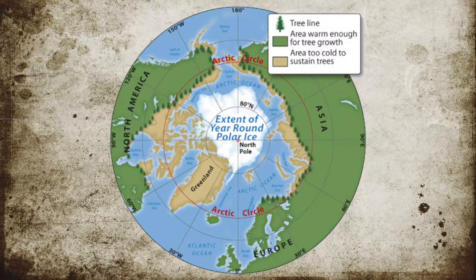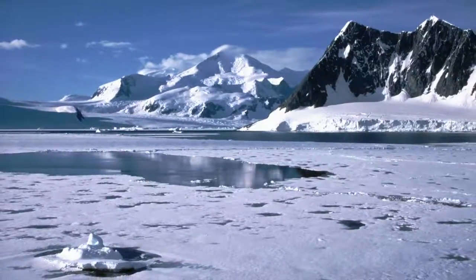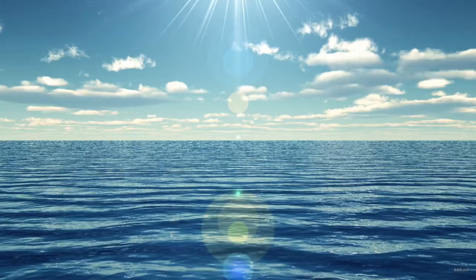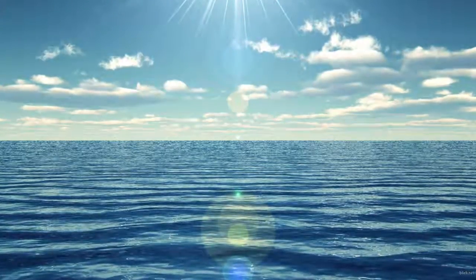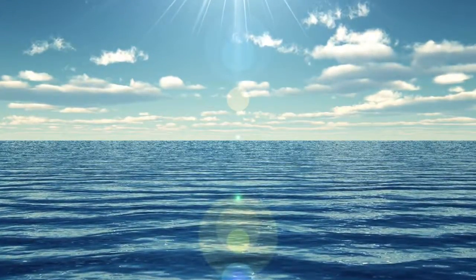The second problem is that trees do not grow everywhere. Areas like deserts, the Arctic, and our oceans do not have trees growing in them. So how do we get climate records in these areas?